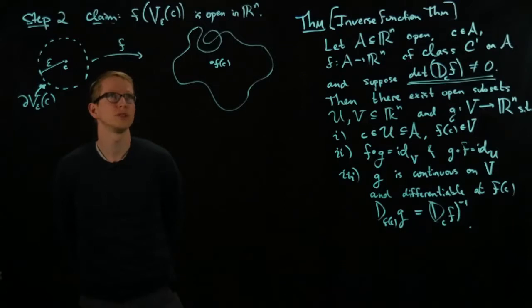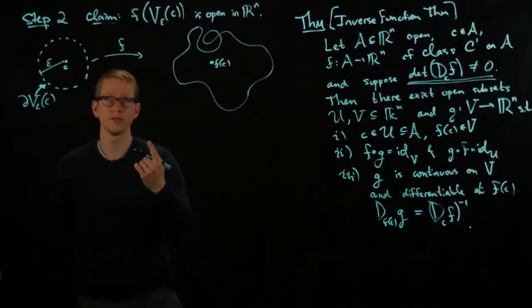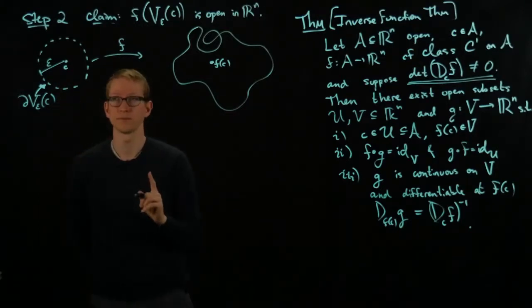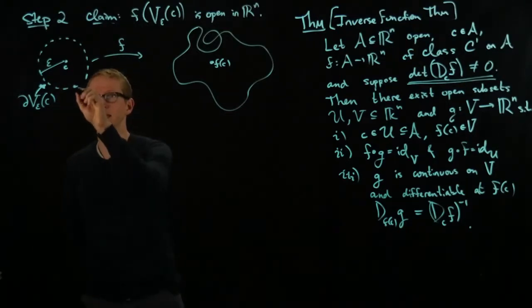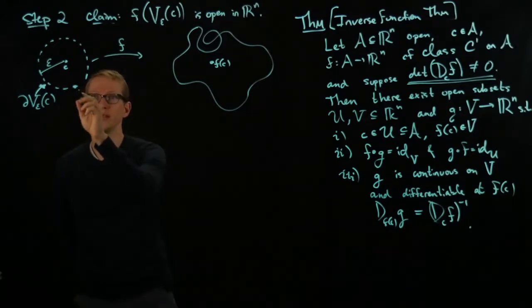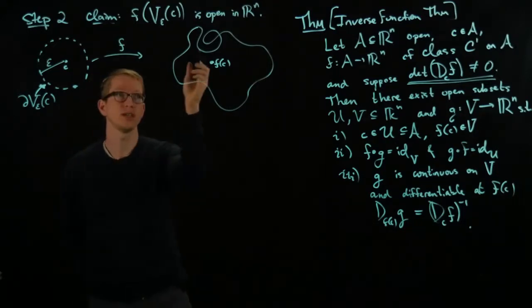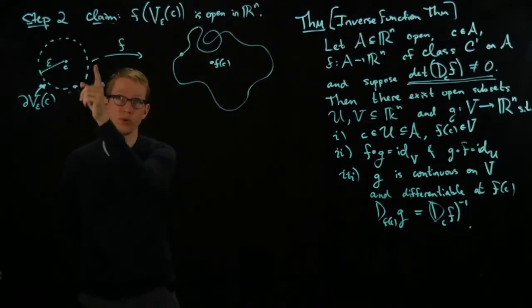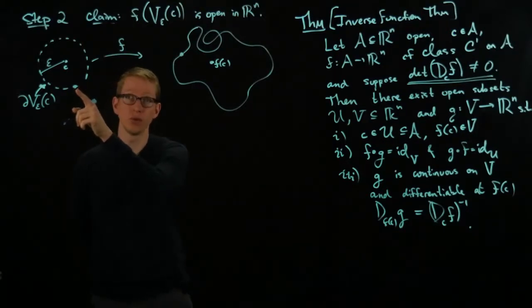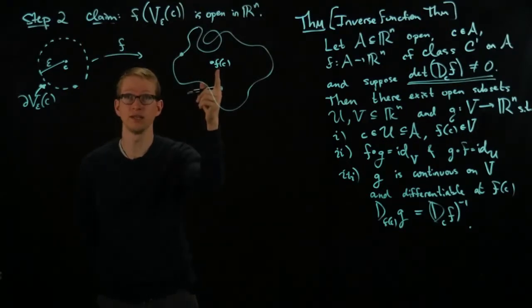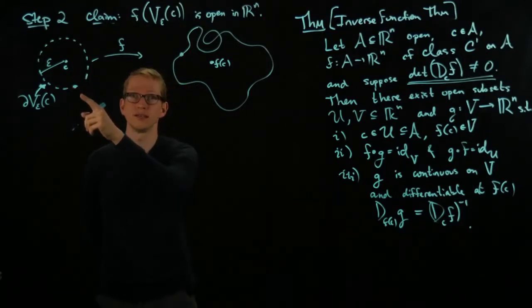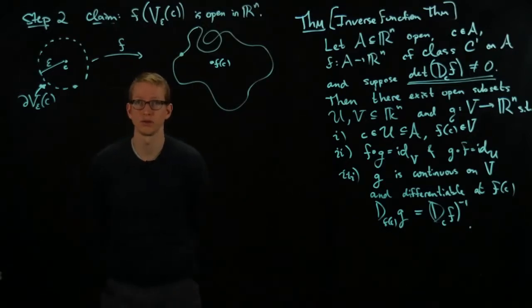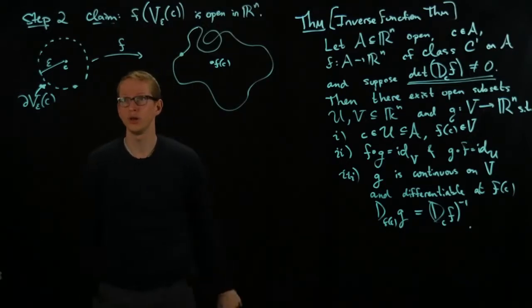Now, here's where we use an interesting fact from the previous statement. So the previous step, we knew that this function was one-to-one. And as a result, if I take any point on the boundary, then I know that any point on the boundary, the image, is going to be disjoint from F of C, no matter which point on the boundary I pick. And the reason is because if it were to be F of C, then this would violate the fact that it's one-to-one since I can take the difference. Here it's positive, but here it's not. And in that inequality, we knew that that was a contradiction.